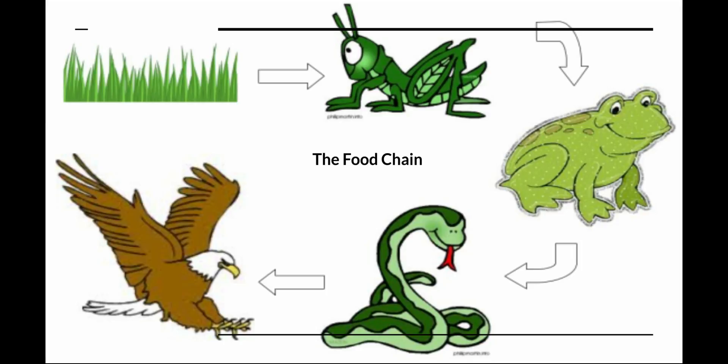So in this example, a simple food chain would start with grass, which a grasshopper eats. The frog eats the grasshopper, the snake eats the frog, and the eagle eats the snake. Can you think of another food chain?